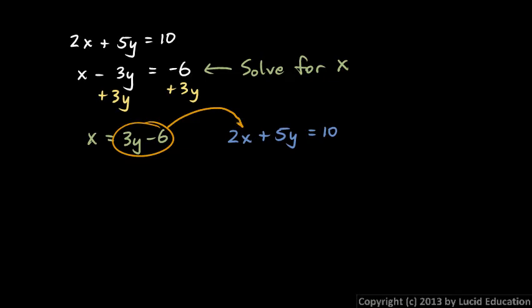So let's rewrite this equation, but in place of x, write this expression, which is equal to x. So here we have 2 times x, but x is 3y minus 6 plus 5y equals 10.